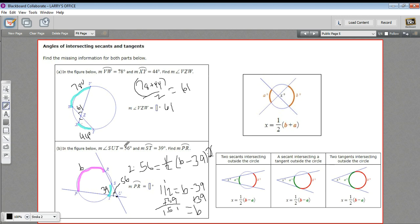So this arc PR is 151 degrees in measure. So that's a little bit of work with these problems where you have secants and tangents intersecting a circle.